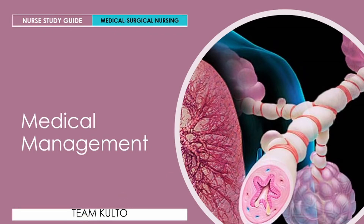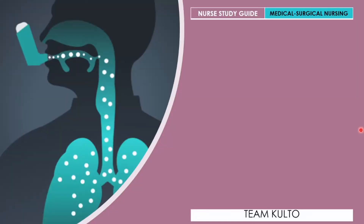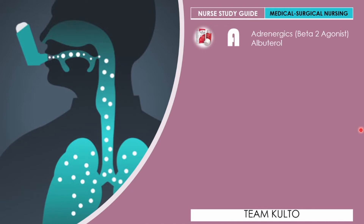Now let's discuss the medical management of asthma. Remember the mnemonic ASTHMA. 'A' stands for Adrenergic — specifically Beta-2 agonists such as albuterol. Beta-2 agonist bronchodilators, or short-acting beta agonists (SABAs), provide quick relief of asthma symptoms. Examples include short-acting medications: albuterol (brand names AccuNeb, Proventil HFA, ProAir HFA, Ventolin HFA) and levalbuterol (Xopenex and Xopenex HFA).